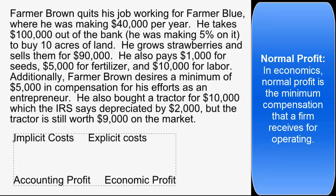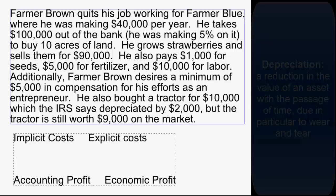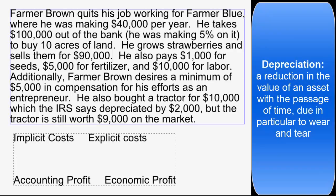That $5,000 is over and above any other labor effort he puts in — just $5,000 for the fact that he's taking a risk and working as his own boss. It's harder than working for someone else. He also bought a tractor for $10,000 which the IRS says depreciated by $2,000 over the last year, but the tractor is still worth $9,000 on the resale market.